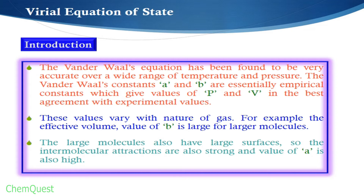So straightforwardly, the values of a and b are larger for large molecules and smaller for small molecules. As I mentioned earlier, the values of a and b are dependent upon the nature of the gas, and they are also affected by applied temperature and pressure — particularly the value of a, which is affected by temperature.